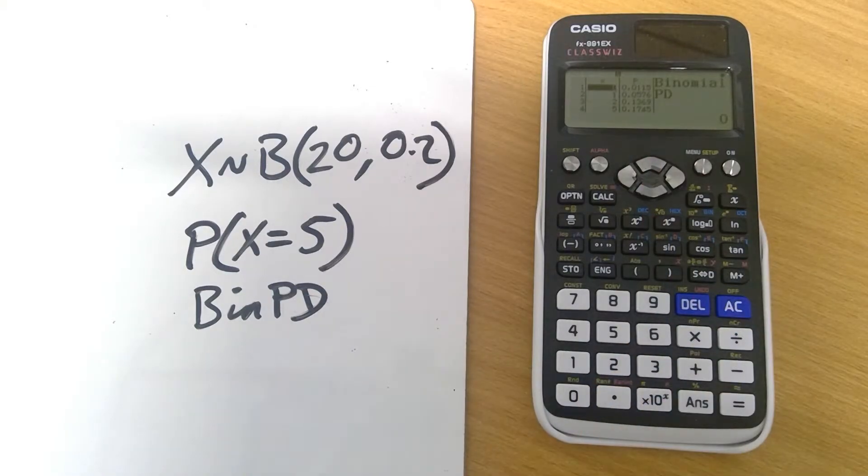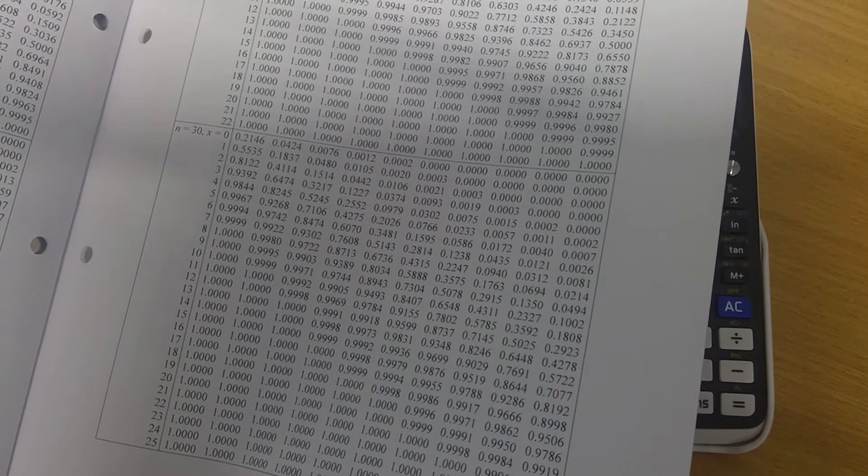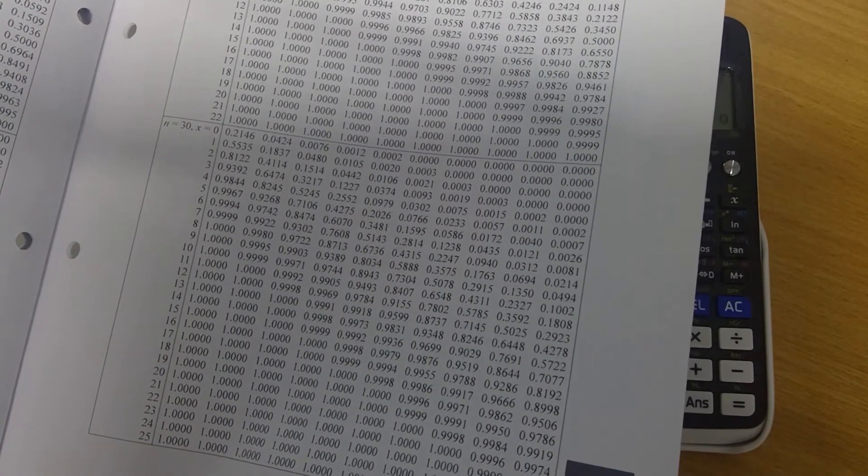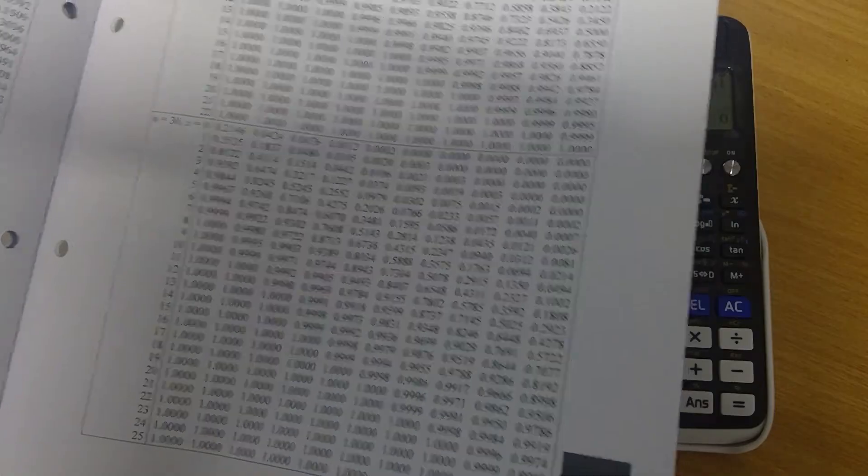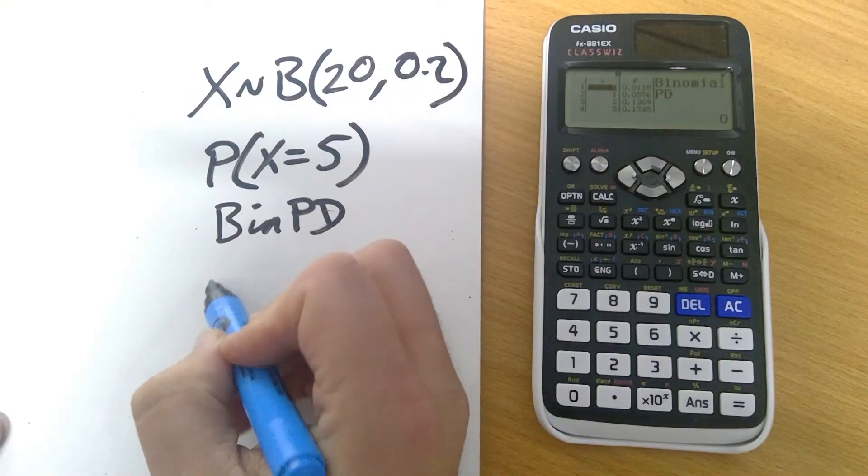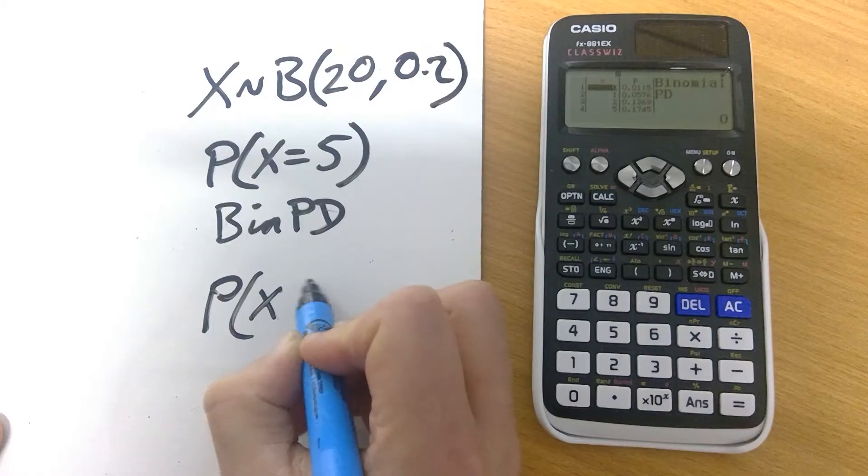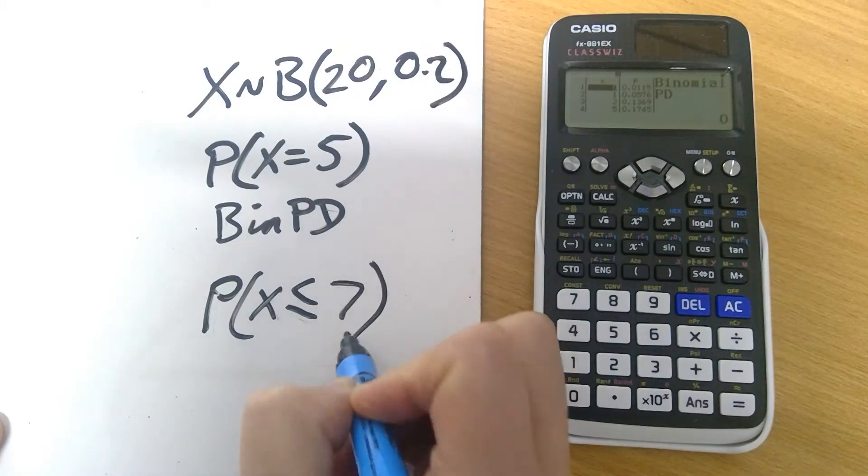What you quite often want to do though is that you want to do the cumulative distribution tables. These are the things that you get given in A-level exams, all of this kind of stuff where you get all those values, where it's the distribution from 0 up to a certain value. And it can do all of that too. So what we're going to do here is the probability of X being less than or equal to 7.